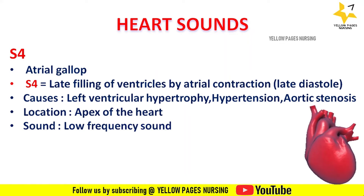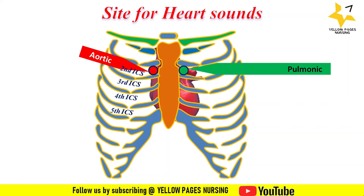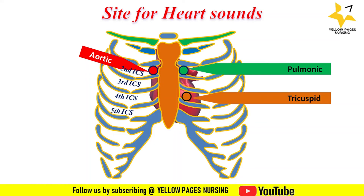There are four main sites for auscultating heart sounds. First, the aortic area, found in the second intercostal space to the right of the sternum. Second, the pulmonic area, found in the second intercostal space to the left of the sternum. Third, the tricuspid area, found in the fourth intercostal space to the left of the sternum, where other right heart sounds are also heard. Finally, the mitral area, found in the fifth intercostal space along the mid-clavicular line, where left heart sounds can also be heard.